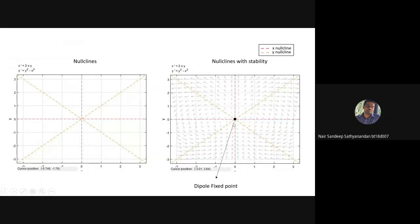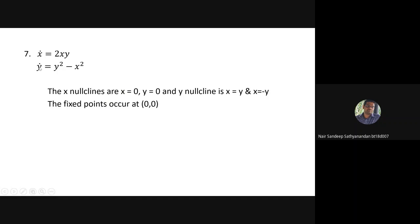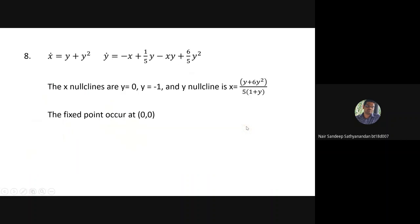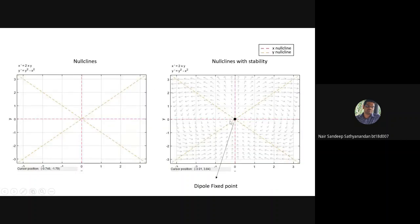Another interesting example is the equation x-dot = 2xy and y-dot = y² - x². The x-nullclines are defined by x=0 and y=0; the y-nullcline is defined by x=y and x=-y. The fixed point occurs at the origin. This kind of system is called a dipole fixed point — it converges from the bottom and diverges from the top, which is a special kind of fixed point.